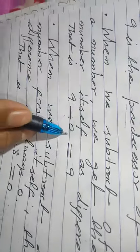9 minus 0. When you subtract 0 from any number, you get the number itself.